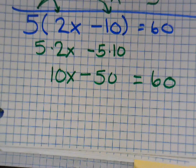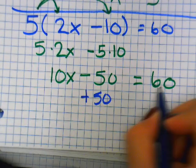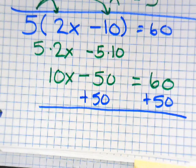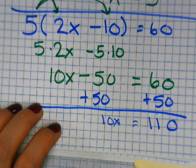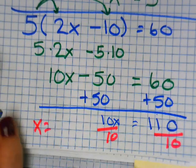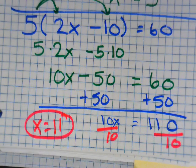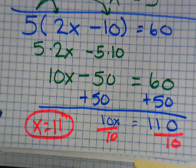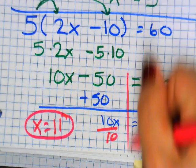What's 5 times 2x? 10x. Minus, what's 5 times 10? 50 equals 60. How do I move the 50? Plus 50, because right there it says minus. 0, 6 plus 5 is 11. How do I move the 10? And 110 divided by 10 is 11.